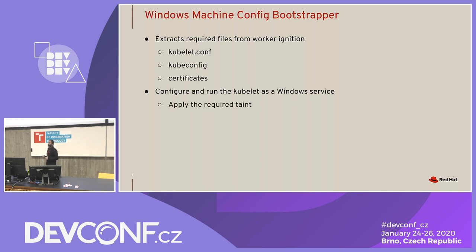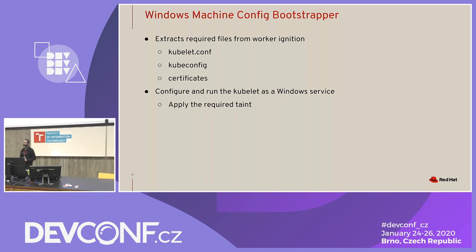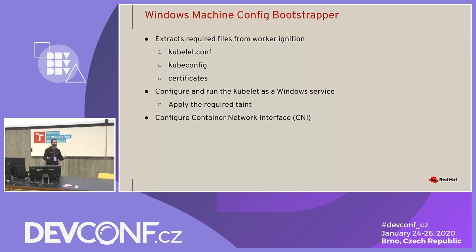As part of this configuration, we tell the kubelet to apply taints to the nodes it brings up. Those taints identify the node as a Windows node, so when you write your pod spec or deployment spec and specify that you can tolerate the taint, your application lands on the right node. The WMCB also configures the Container Network Interface (CNI), which is required for networking.